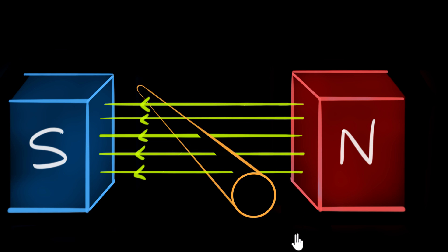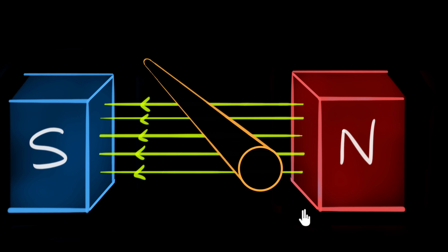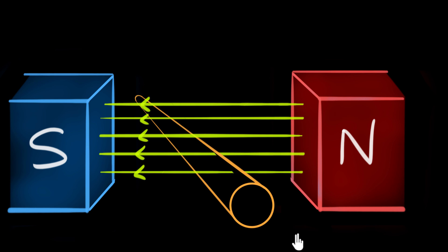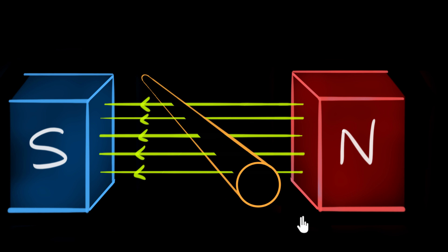As we move this wire, notice it starts cutting the magnetic field and whenever it does that an electric current will be induced in this wire. Of course we need a closed circuit for that, so we can imagine the wire from here gets connected to some galvanometer somewhere.